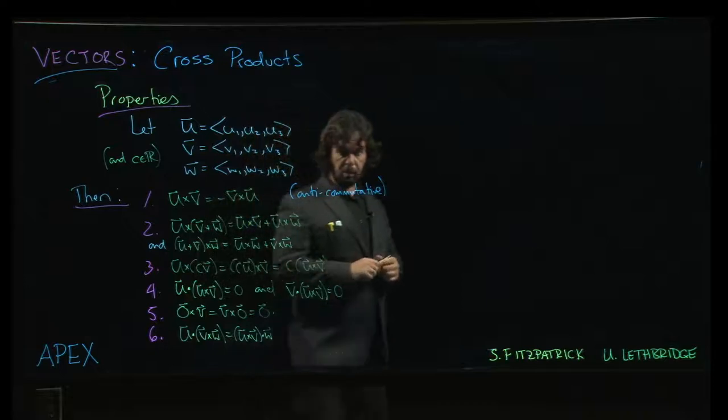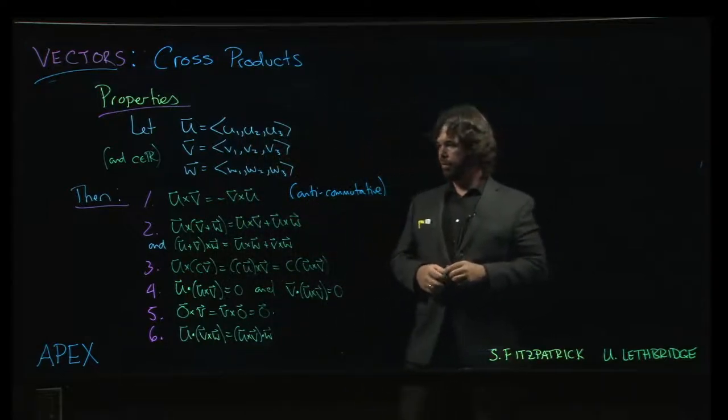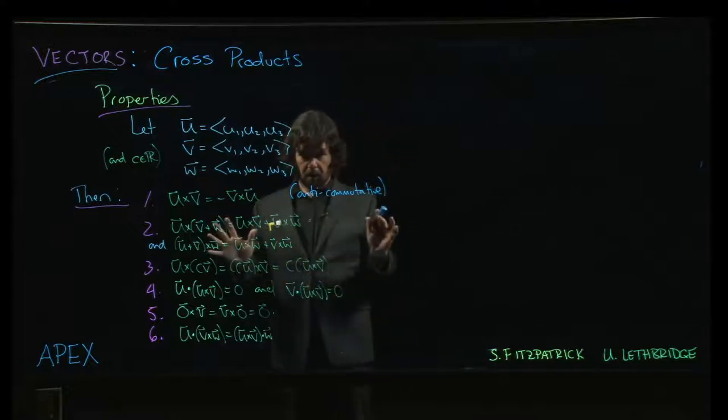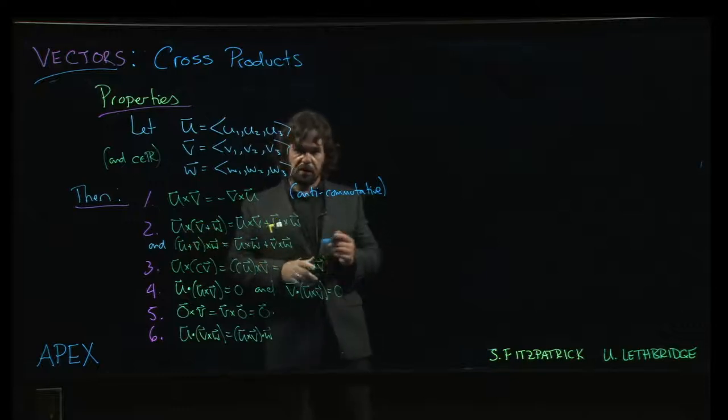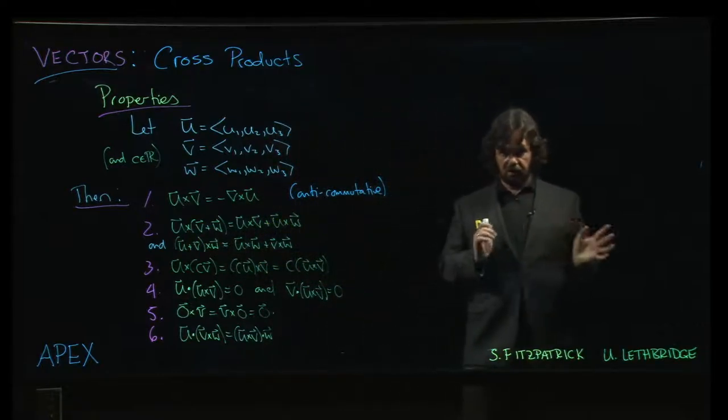Now, the cross product is distributive which is useful. So you can distribute the cross product across addition. That can sometimes come in handy. Notice that we've stated two different distributive properties depending on whether the addition is on the left or on the right.